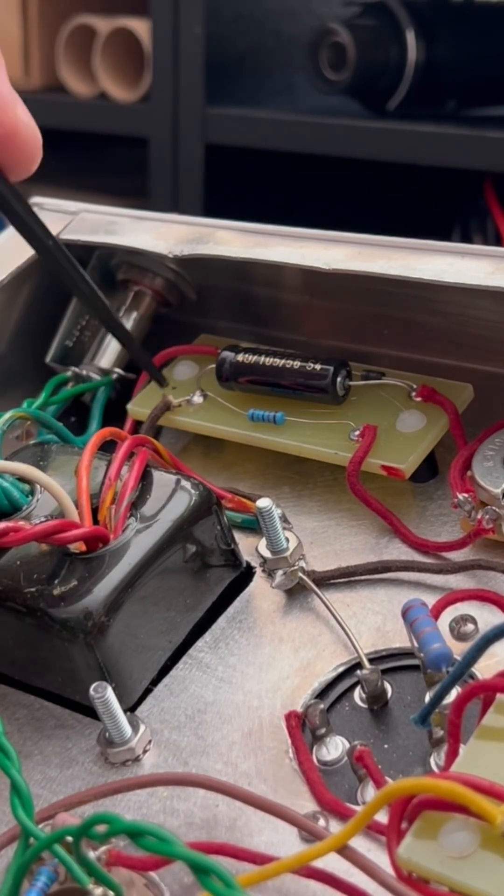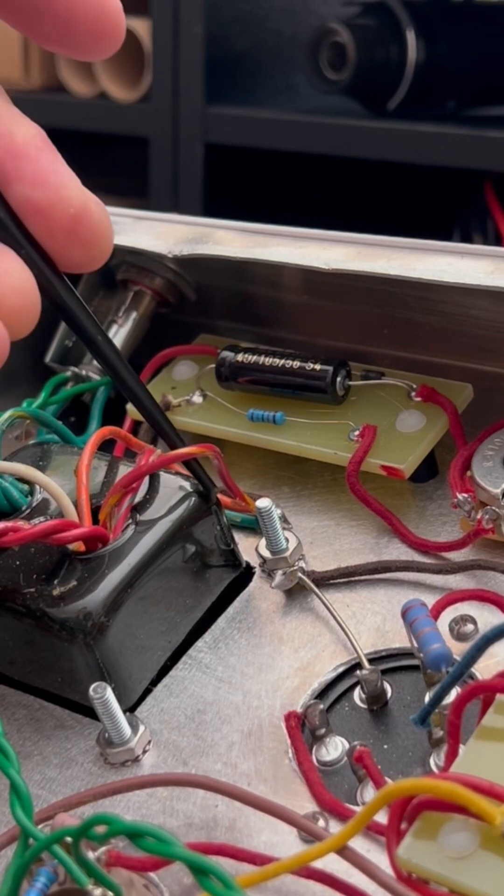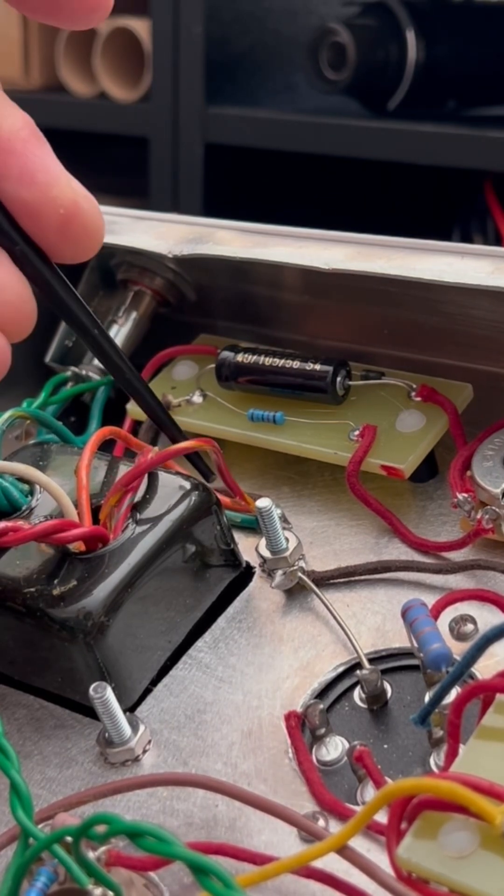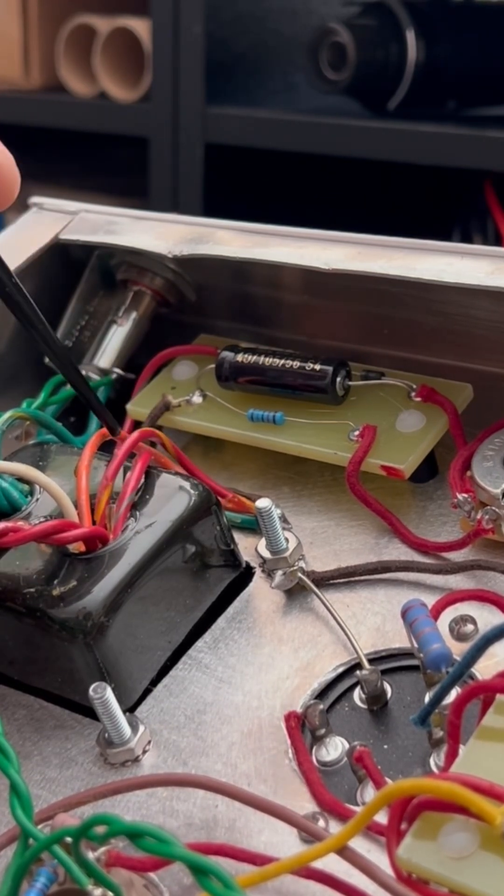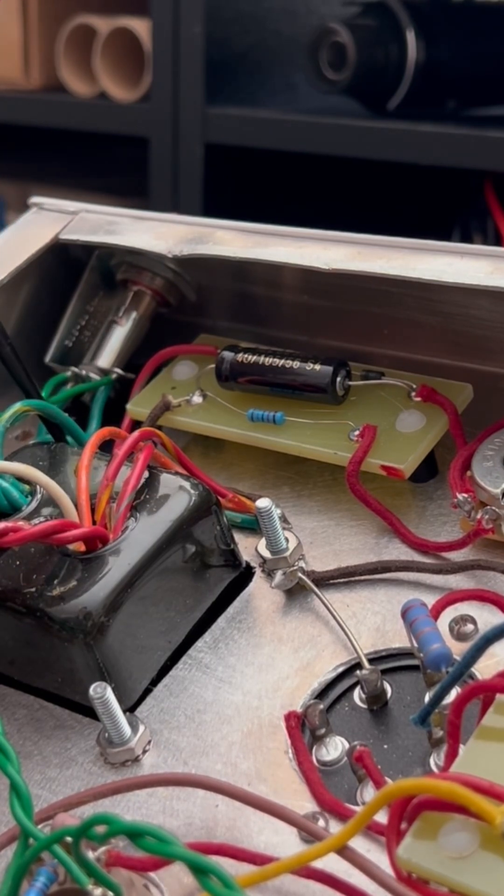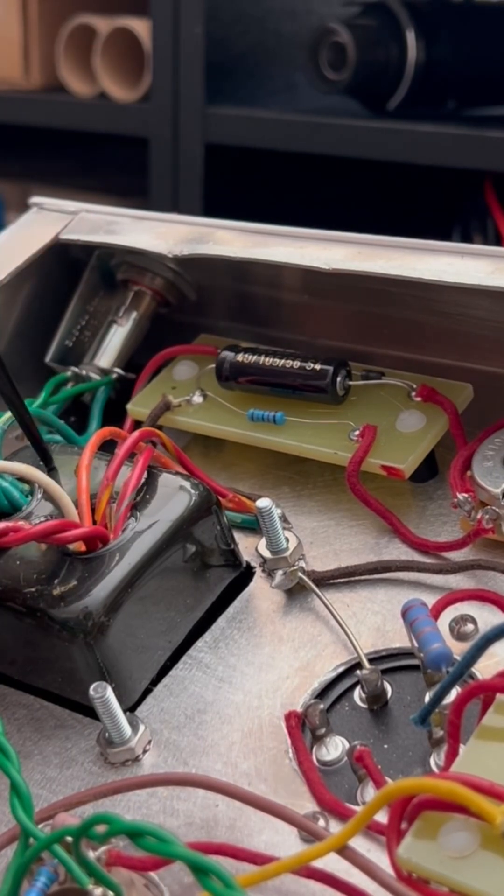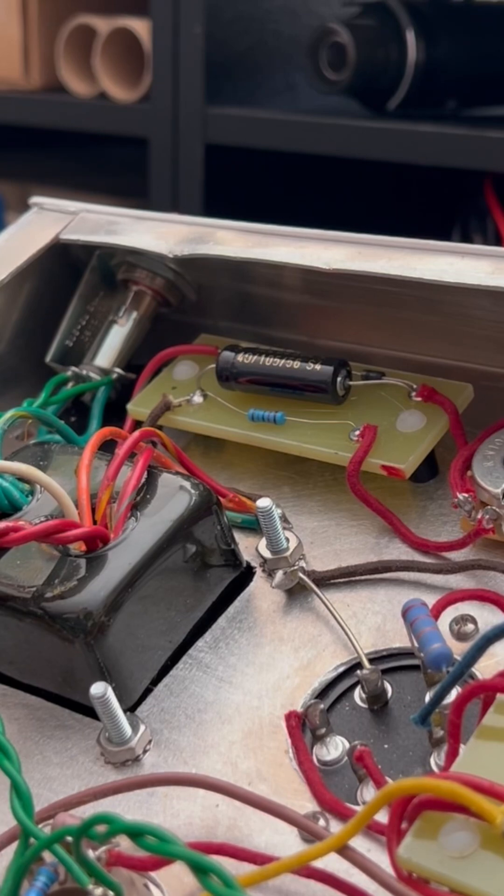But the problem is that we have the center tap. We have the high tension center tap here grounding along with the filament supply center tap and the bias supply. And then, hell, even the shield for the power transformer's mixed in there too. That doesn't matter really.